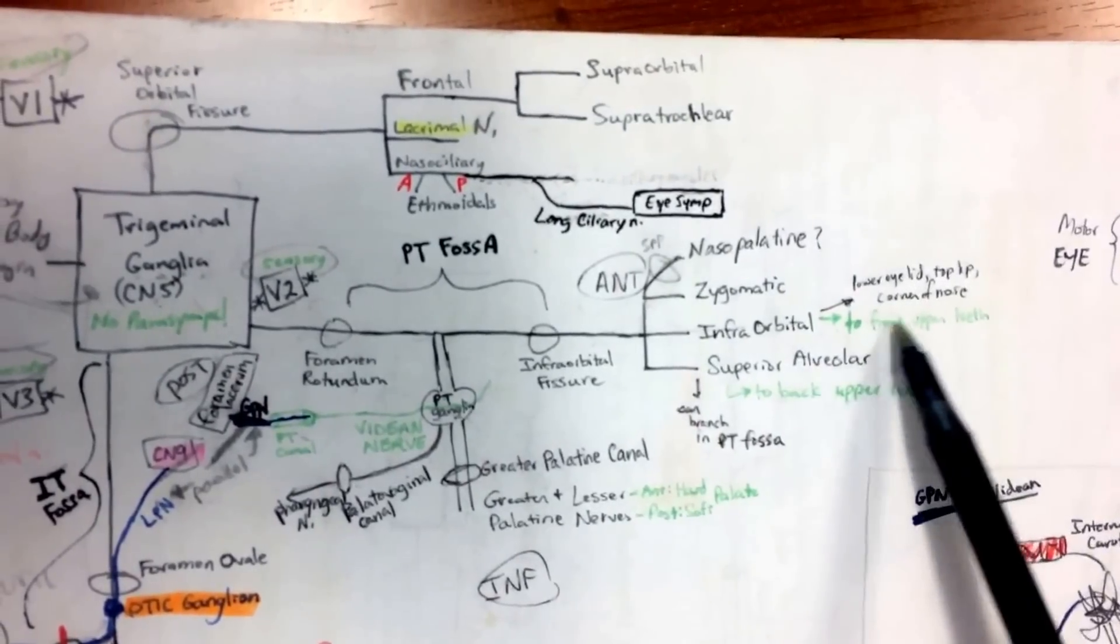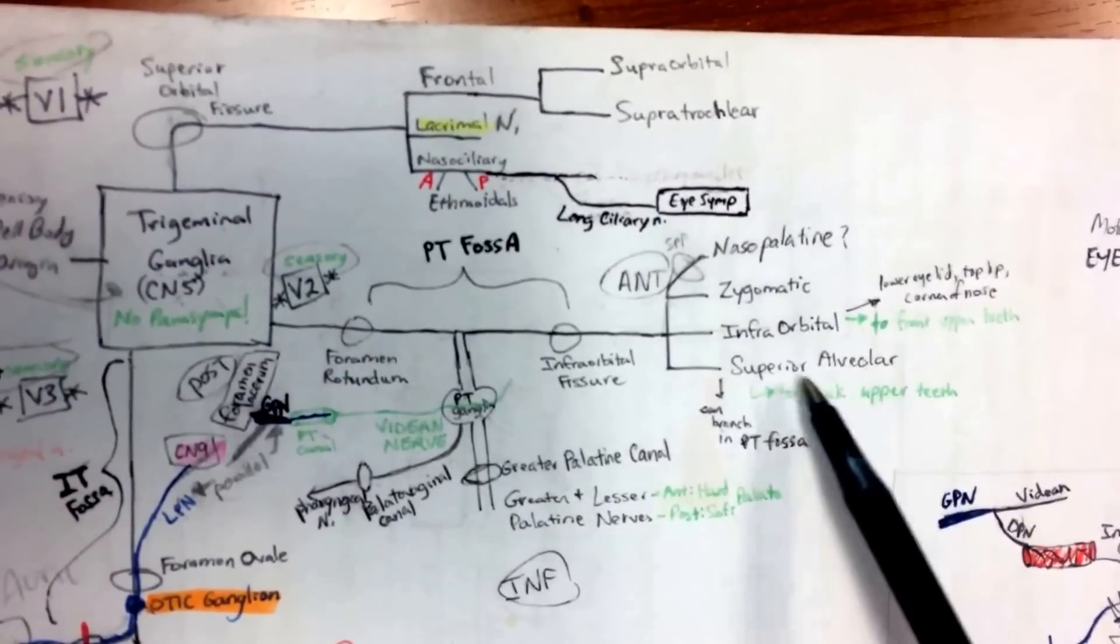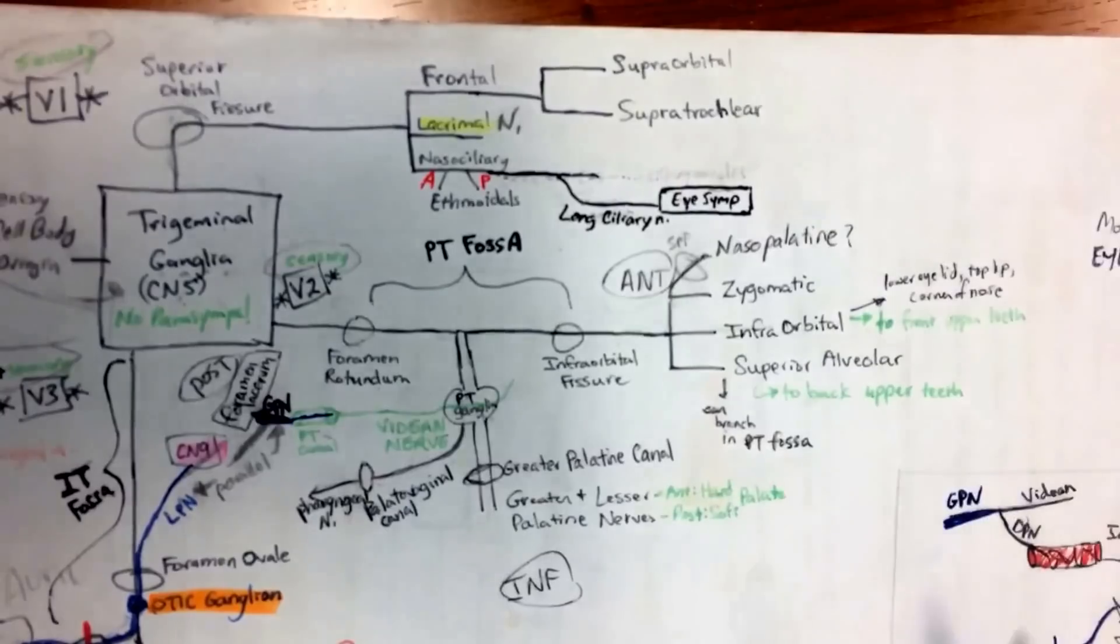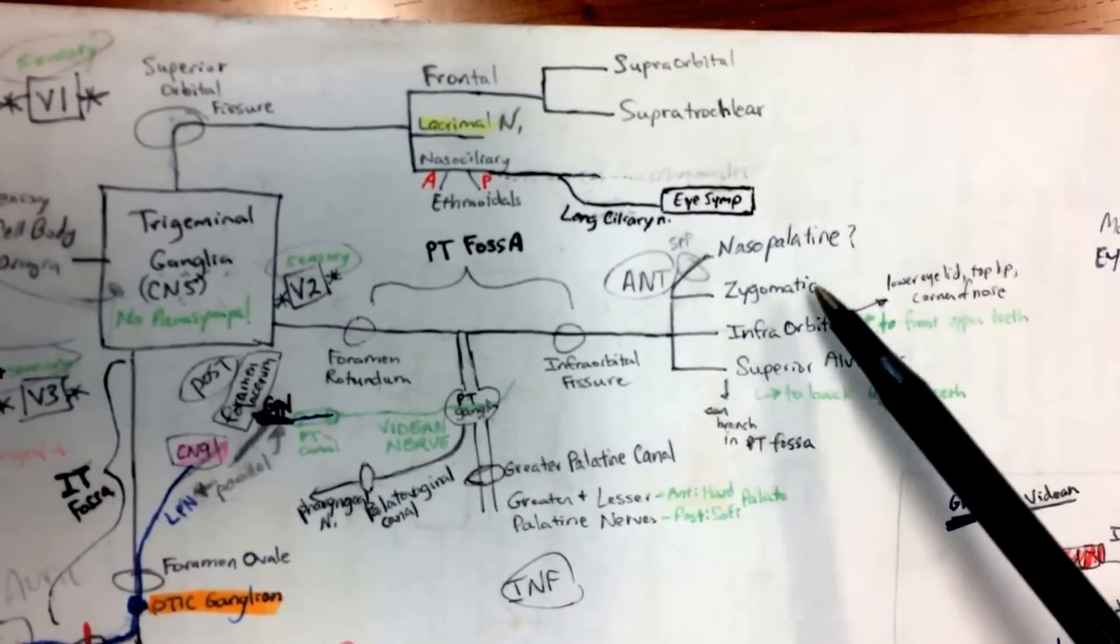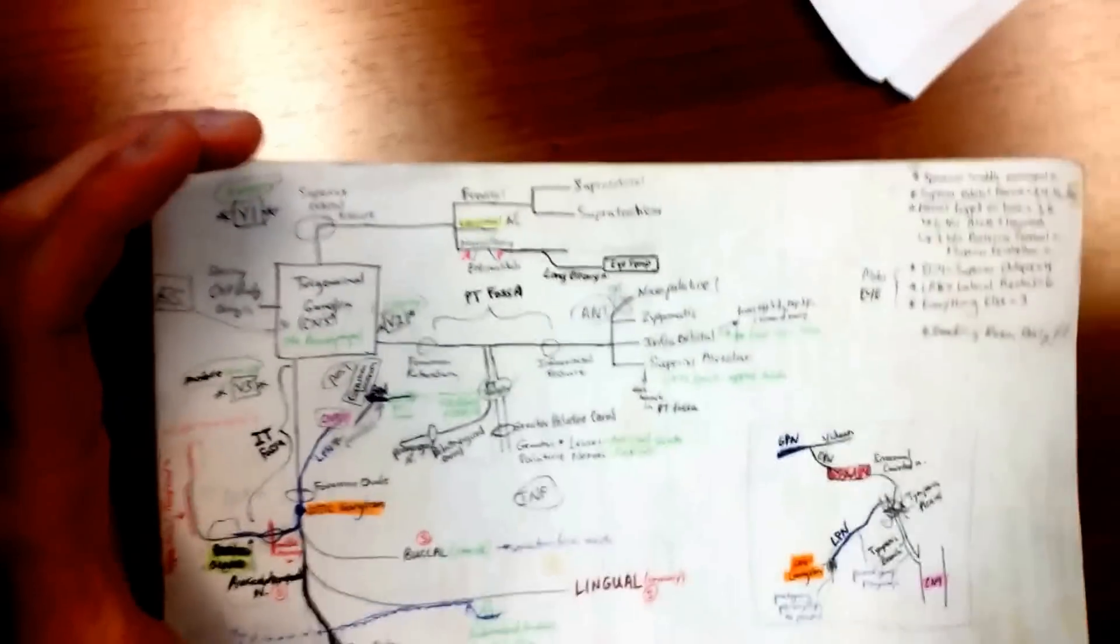So sphenopalatine foramen. And we already took care of zygomatic and infraorbital. Infraorbital is going to the front upper teeth. And then you have superior alveolar. Superior alveolar is going to the back upper teeth. So if you just remember those, zygomatic, infraorbital, you can kind of picture again, the big picture here.